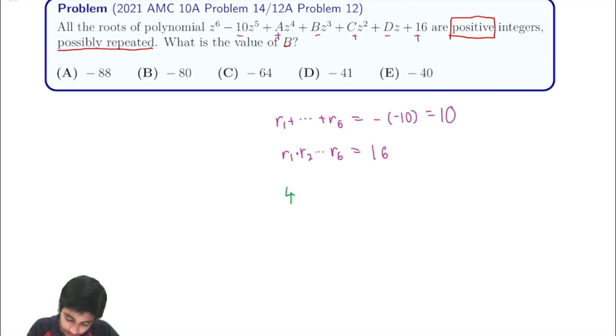then we're going to have to have something like 4, 4, 1, 1, 1, 1, or 4, 2, 2, 1, 1, 1. And these cases don't work.